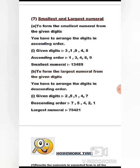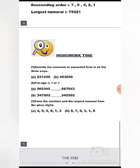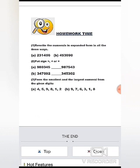To form the largest numeral from given digits, you arrange the digits in descending order, that is from big to small. For example, given the digits 2, 5, 1, 4, 7 — the descending order is 7, 5, 4, 2, 1 — so the largest numeral is 75421.